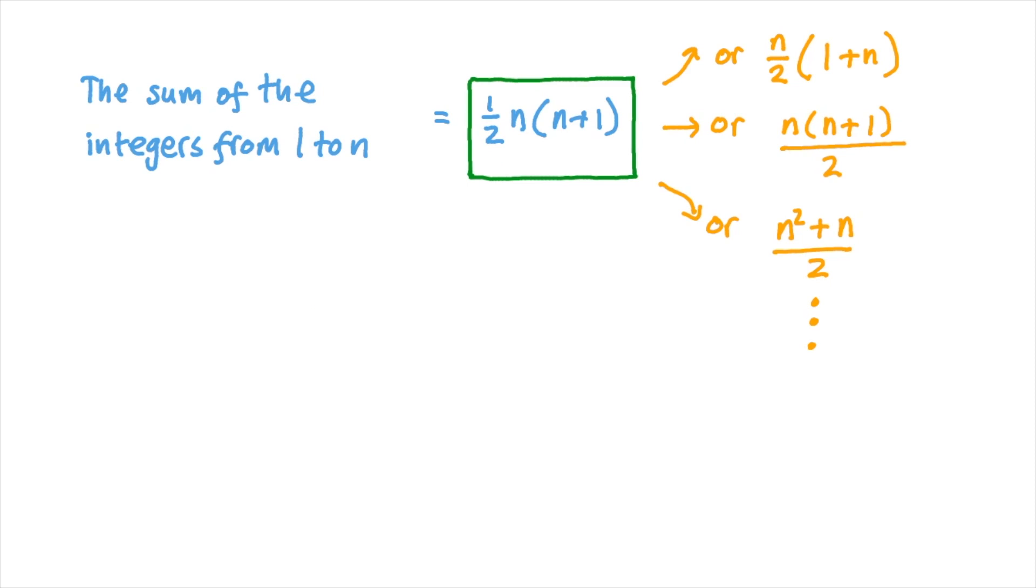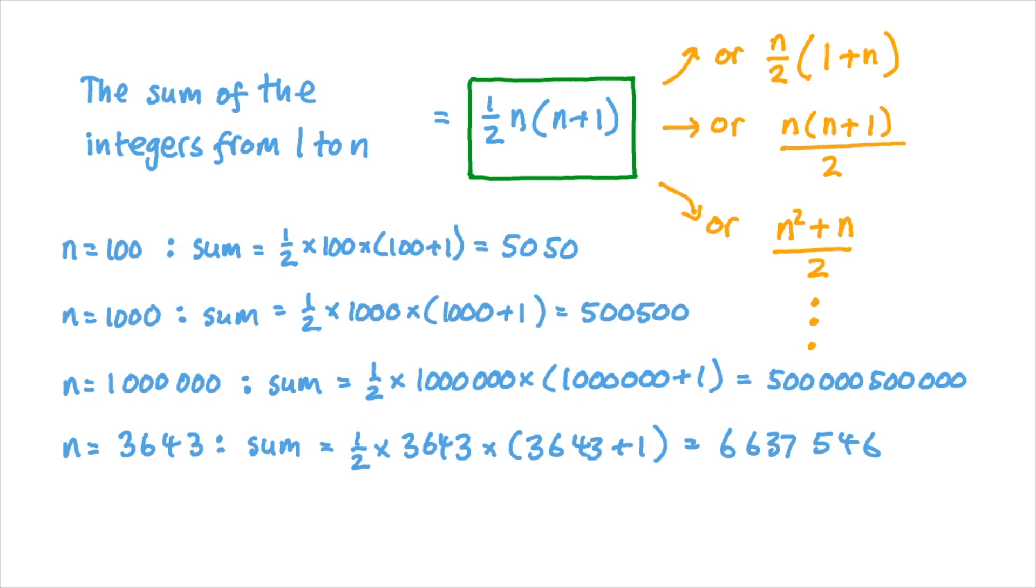Now having arrived at the same formula three different ways—and I might say that there are lots of different ways of expressing that algebraically—we can apply it to any sequence of numbers from 1 to some number. So when n is 100, as we saw, the sum is 5050. When n is 1000, the sum is 500,500. When n is a million, the sum is 500,000,500,000. And even when we start off with a slightly less friendly number like 3643, the calculation isn't trivial if you haven't got a calculator, but it's still a lot easier than adding up 3643 different numbers.